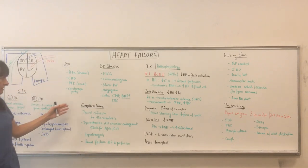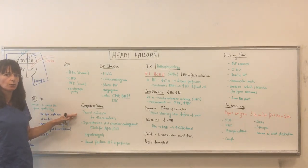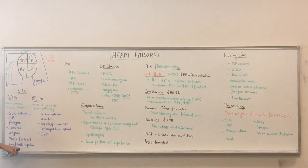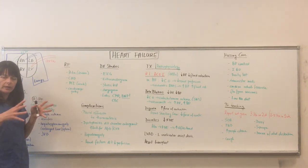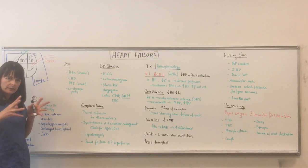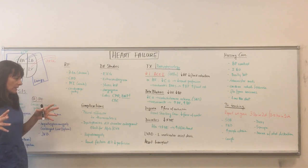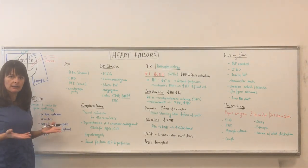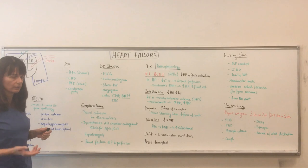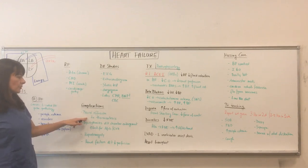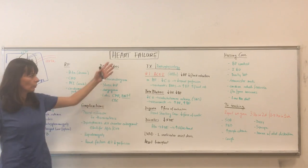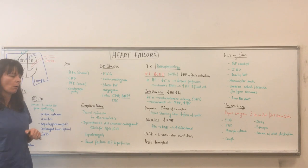Now complications. Heart failure can lead to pleural effusion. If that left-sided heart failure gets so bad that all that fluid is backing up into the lungs, we're seeing pink frothy sputum, and the lungs can't handle that fluid — it's being pushed out into the pleural space. Then fluid will accumulate around the lining of the lungs, definitely causing shortness of breath. The treatment for pleural effusion is a thoracentesis, where basically a needle is inserted and that fluid is drained out.